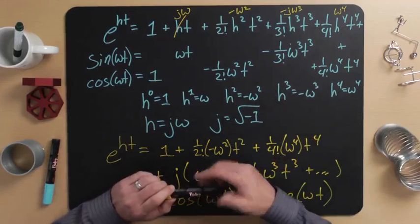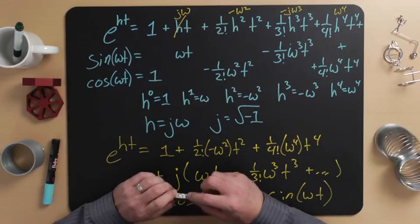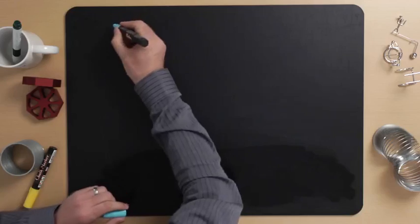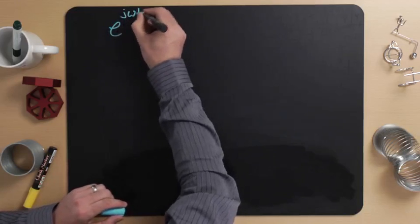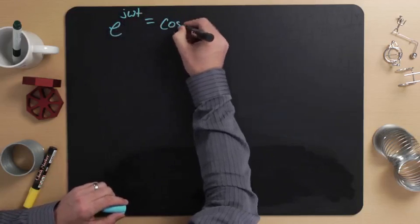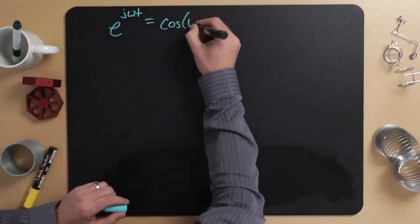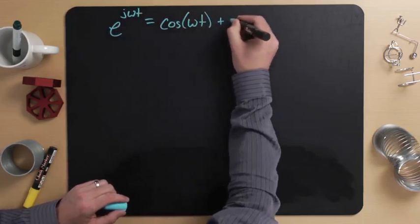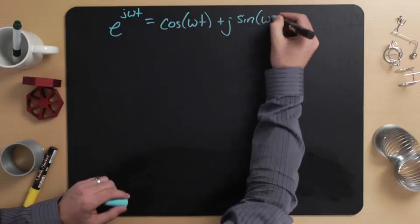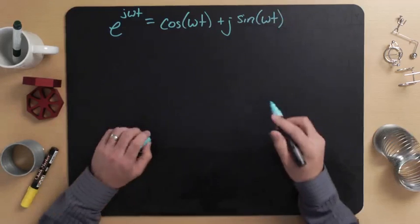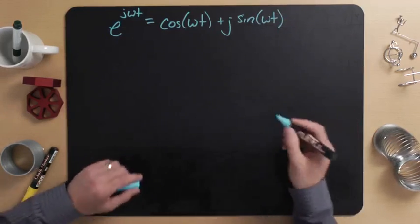This formula — e to the j omega t equals cosine of omega t plus j sine of omega t — is called Euler's formula, and you will use it many times while taking this course. We get to use Euler's formula any time we want to say an ODE has an exponential solution. So I'm going to write it down for reference: e to the j omega t equals cosine of omega t plus j sine of omega t.